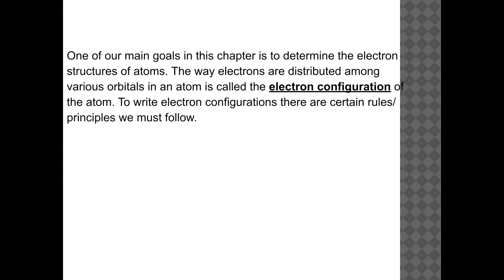Our main goal in this chapter is to determine the electron structures of atoms — how electrons are distributed among various orbitals. These are known as electron configurations. I think of an electron configuration as almost like an address for an electron. To write an electron configuration, there are three rules we have to follow.